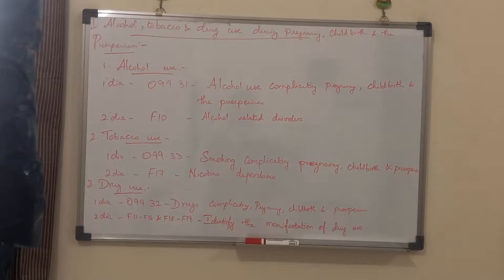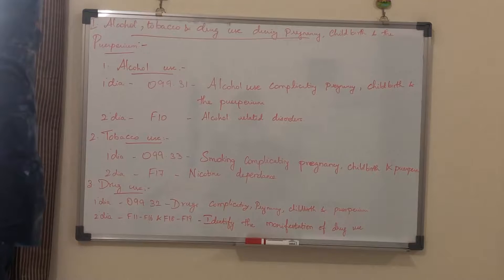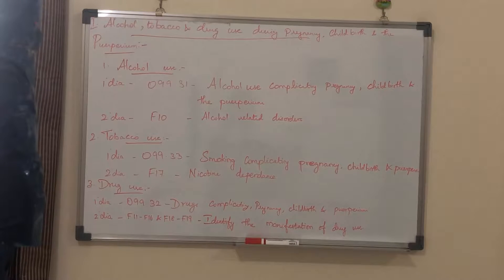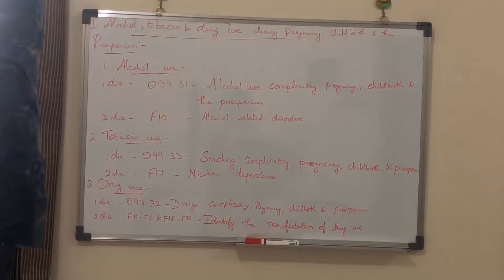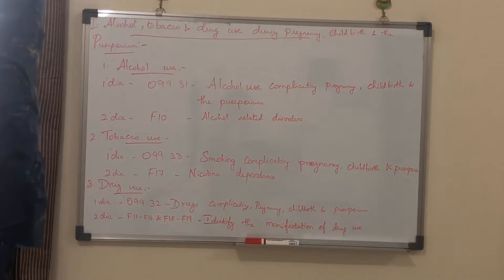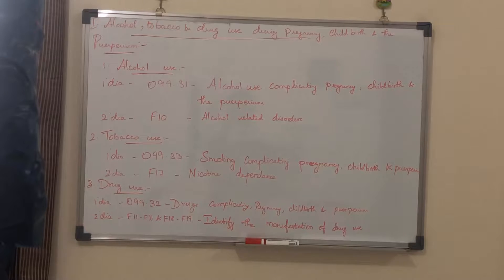The third one is drug use during pregnancy. The principal diagnosis is O99.32, drugs complicating pregnancy, childbirth and puerperium. And the secondary diagnosis is from the F11 to F16 category and F18 to F19 category, to identify the specific medication or drug use.